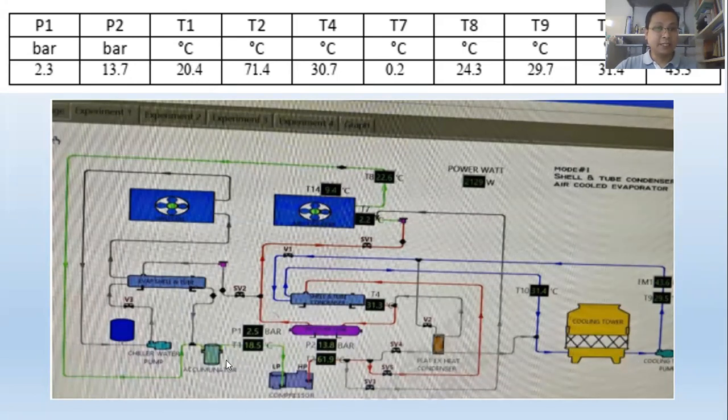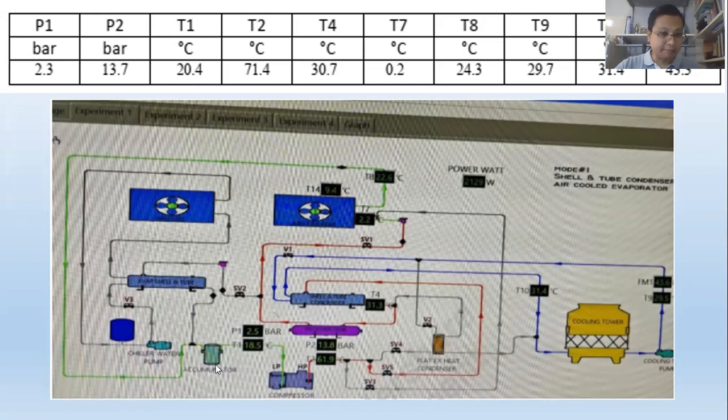From the computer system, T1 is temperature before the pump, heat pump. It means before the pump. And then T2, after the pump. So it means temperature should be increased. T2 is before coming to condenser, and then T4, after condenser. So it should be in the five, one from this condition.